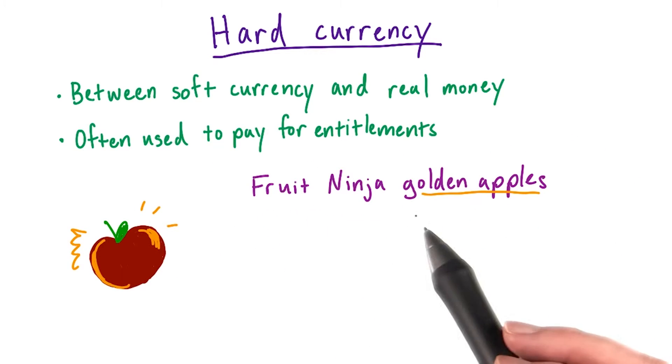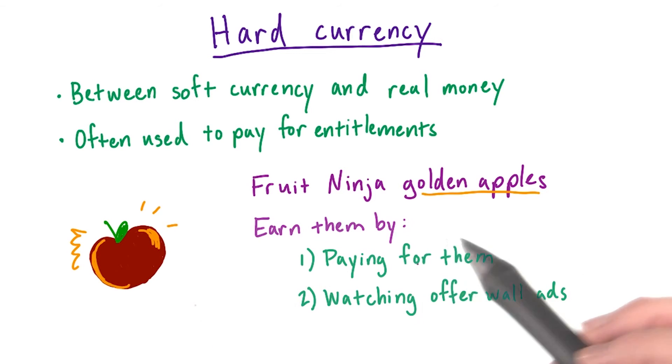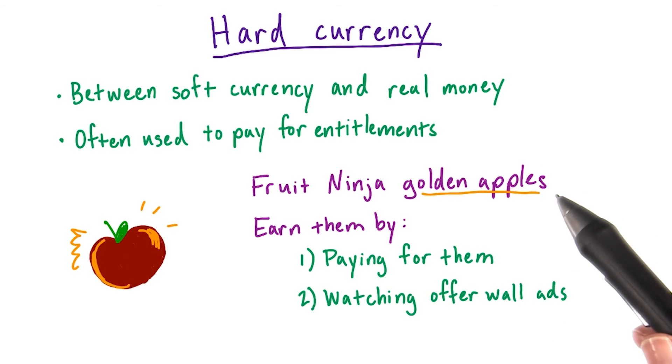In Fruit Ninja, golden apples are hard currency. You can only earn them by paying real money for them or by watching offer wall ads. These apples are used to unlock levels in tournament challenges. So if you want a fun multiplayer challenge, you'll have to pay hard currency for that entitlement. Let's look at some other examples of in-game currencies.